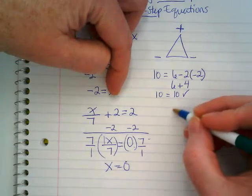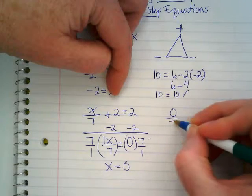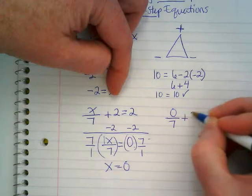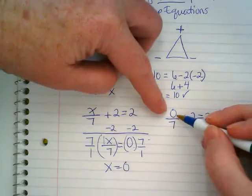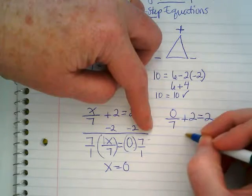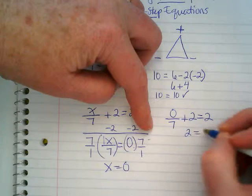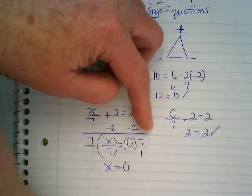We can go back and check. 0 over 7 plus 2 equals 2. Well, what is 0 divided by 7? Zero. Is 0 plus 2 equal to 2? Yes. Then it checks.